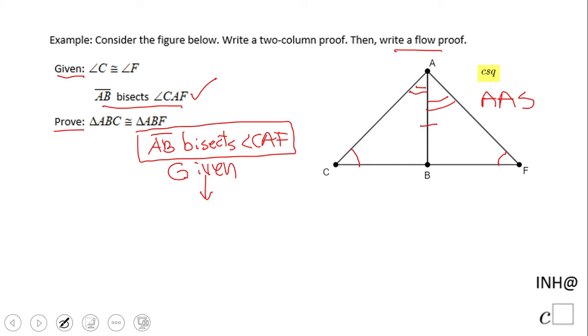Angle CAB congruent to angle FAB. And what's the reason here? Definition of angle bisector. Okay, and this is one of the angles, let's say the first one in my AAS.